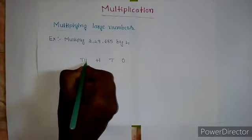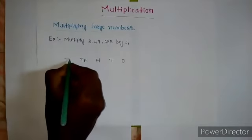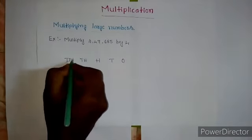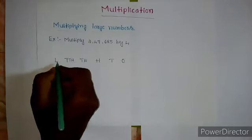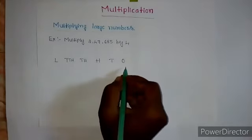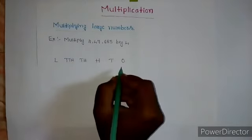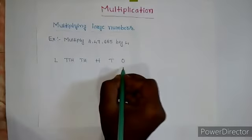Ones, tens, hundred, thousand, ten thousand, and lakhs. Now I am going to place this number in this chart, the place value chart.